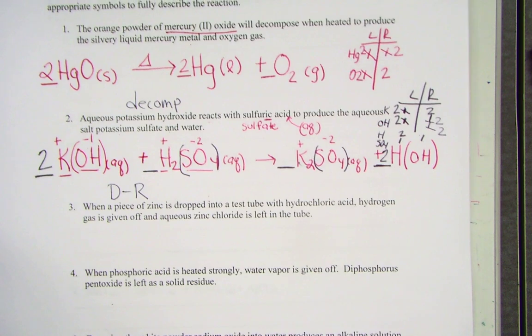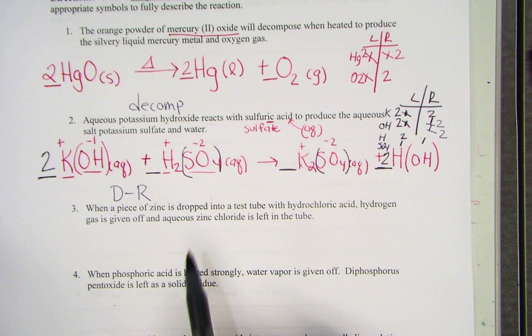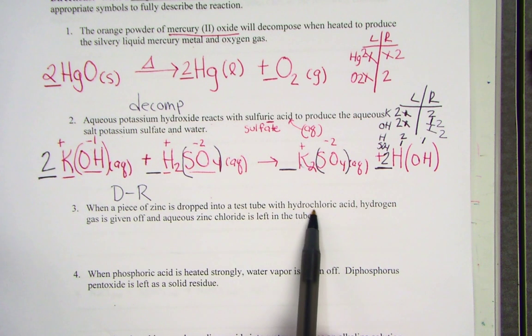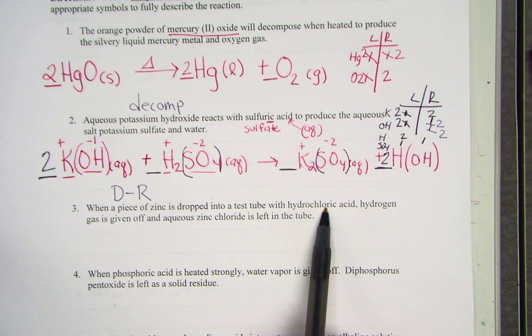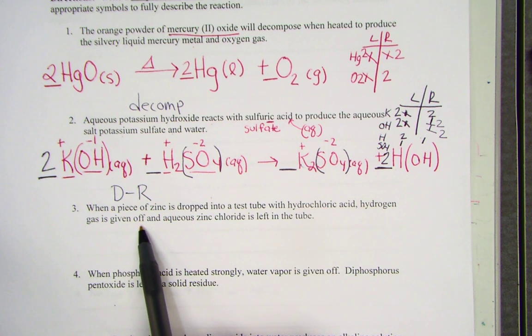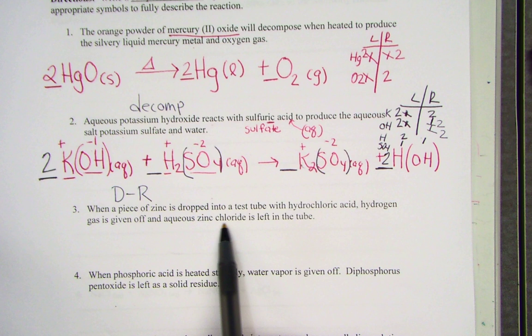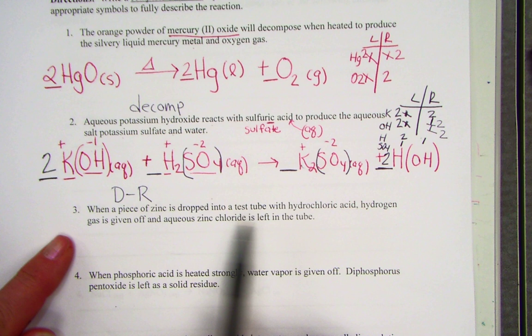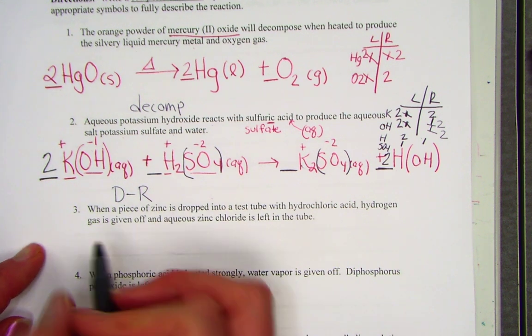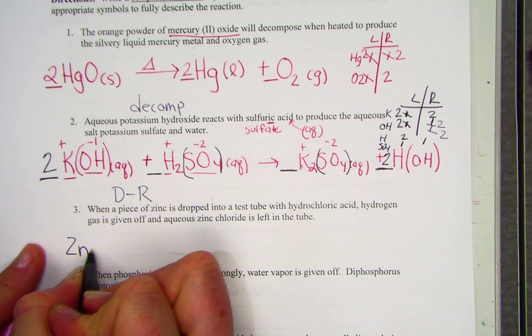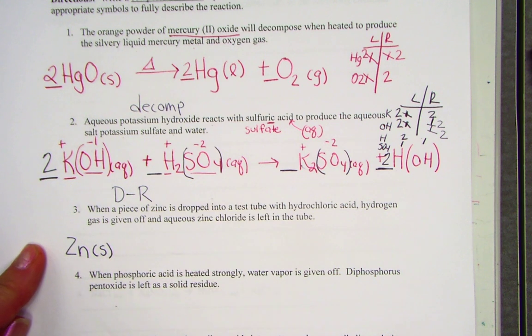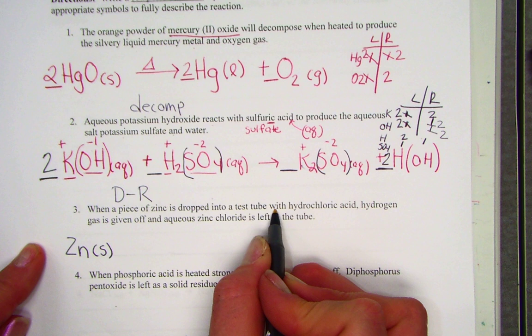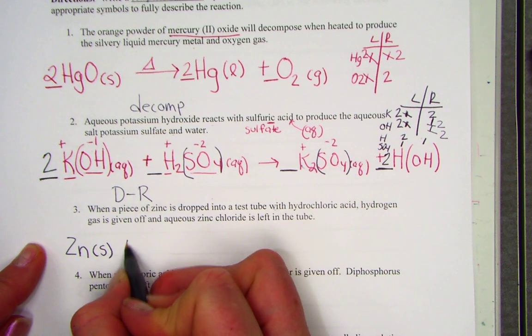We'll read on to number three. When a piece of zinc is dropped into a tube with hydrochloric acid, hydrogen gas is given off, and aqueous zinc chloride is left in the tube. So our first reactant is zinc. Zinc is a metal, written as Zn. It would be in the solid phase.